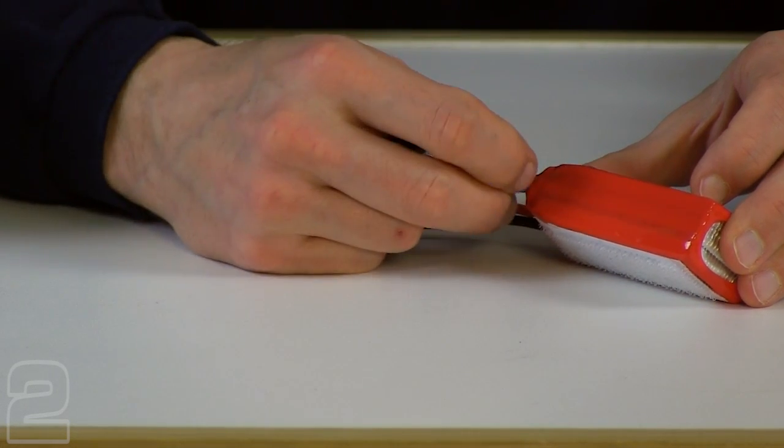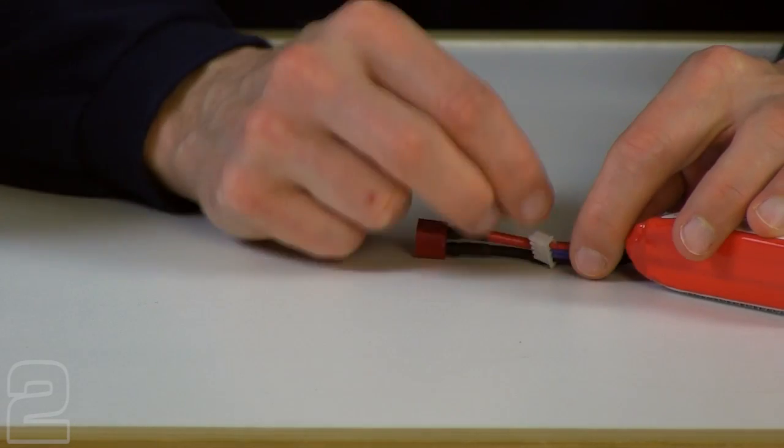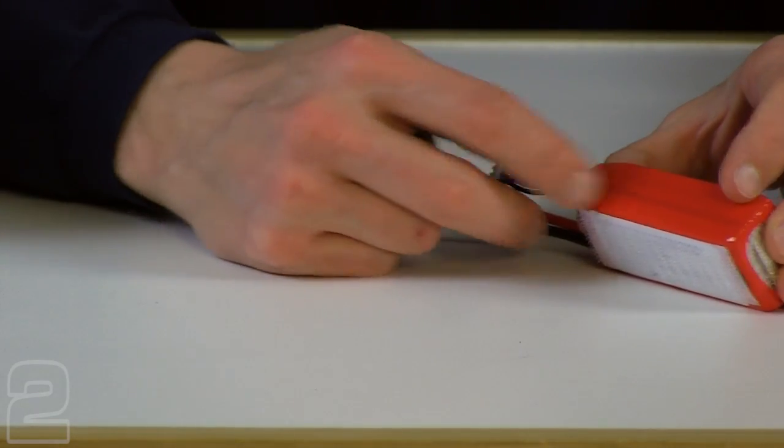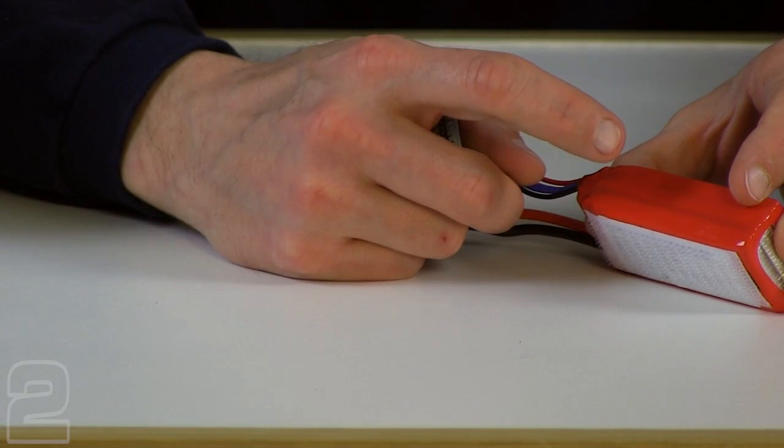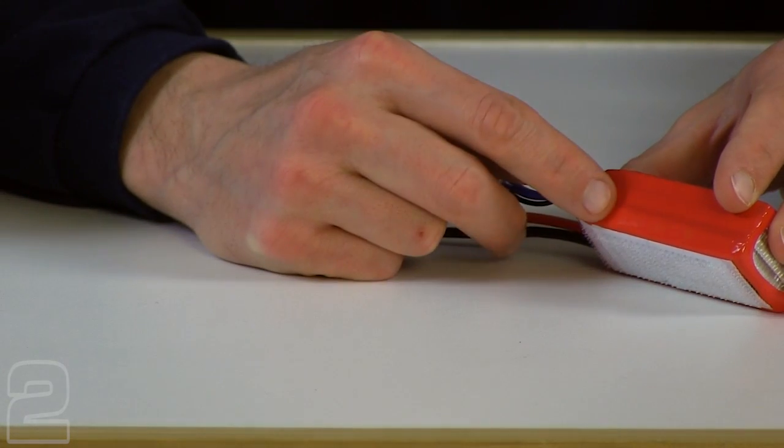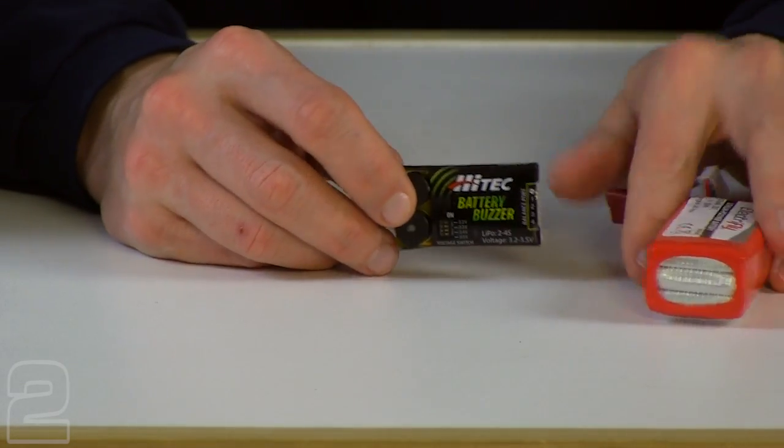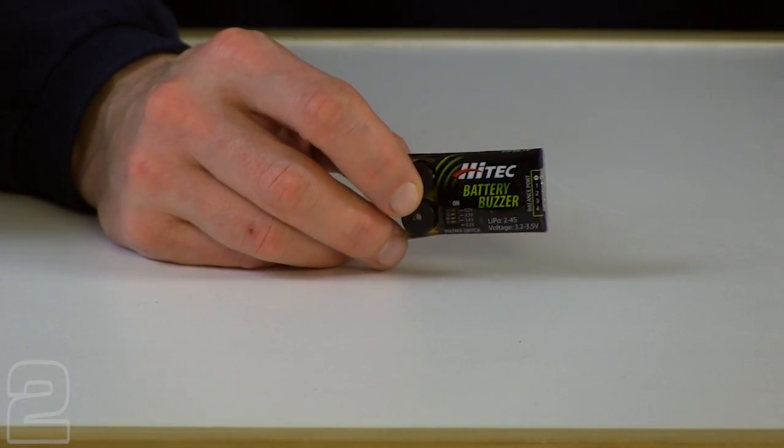Minimum value on a LiPo is 2.7 volts no load, meaning you just take your multi tester and put it on there it says 2.7 volts, that's the absolute critical level. 3 volts under load scenarios and in most cases 3 volts is a safe factor you use. 3.2 for ESC cutoff so our battery buzzer gives us a little heads up before we start hitting any of those critical factors.